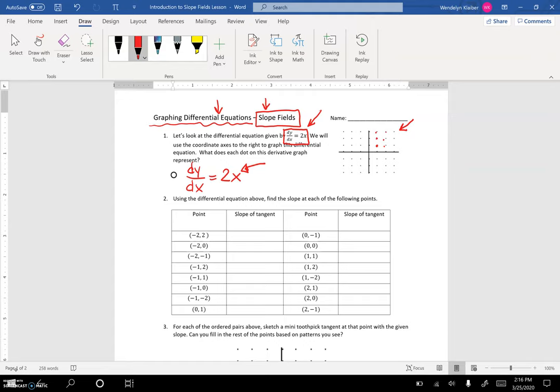That means the slopes when x equals 1 will always be the same. The slopes will always be 2 when x equals 1. So the graph at x equals 1, no matter which point you have, will always be the same. You might be wondering what I'm talking about. Well, let's look.